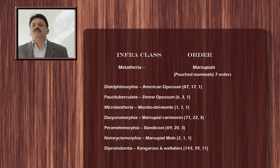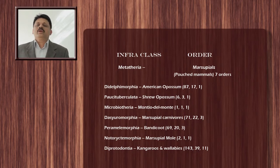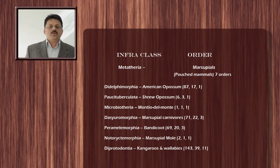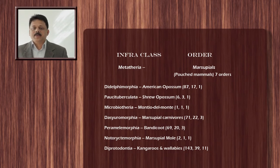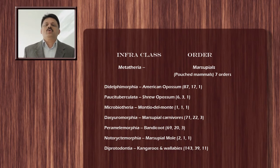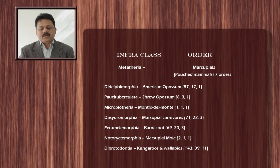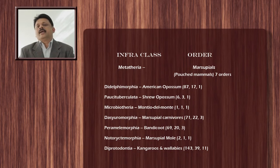The sixth order of Metatherians is Notoryctemorphia, which includes marsupial moles — two species in one genus and one family. The seventh and last order of Metatherians is Diprotodontia, which includes animals such as kangaroos, wallabies, koalas, etc. Altogether there are 143 species of Diprotodontians in 39 genera and 11 families.